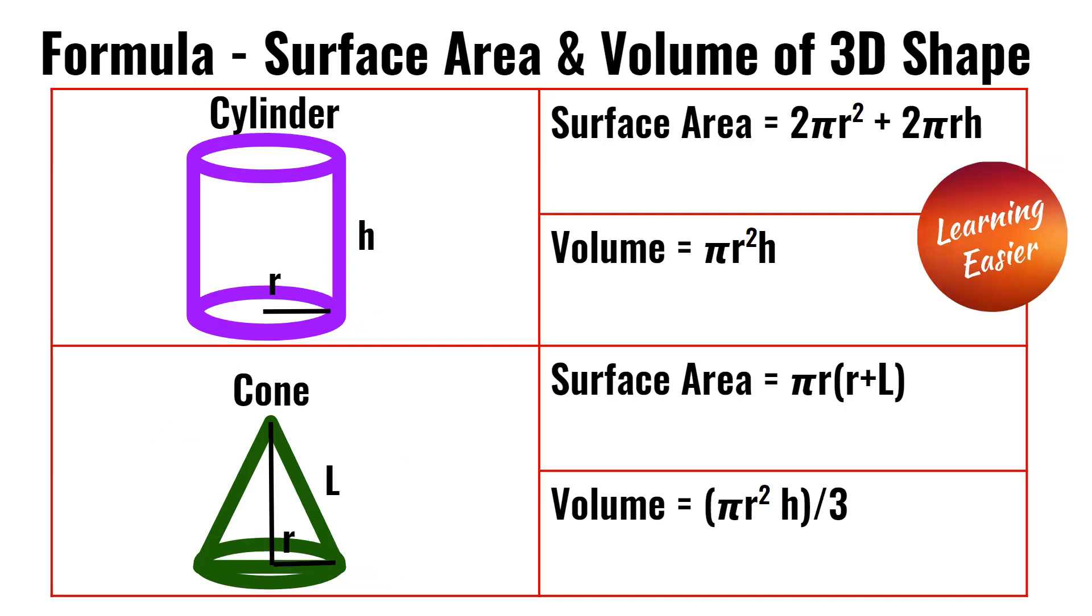For the cylinder, the surface area is 2πr² + 2πrh. The volume is πr²h.